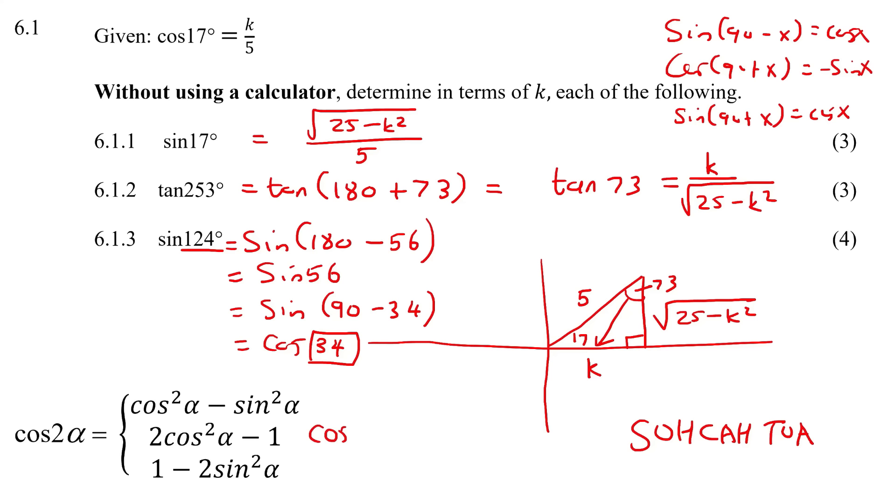I'll just choose this middle one, so cos of 34° is going to become 2 cos² of 17 minus 1, just by using this formula. Now cos 34° is equal to 2 times cos 17 which is k over 5, and it's squared because there we have a square, and then minus 1. So that's just going to become 2k² over 25 - this part here is k² over 25, this 2 was already in the front, so I'll put it like that, and then minus 1.